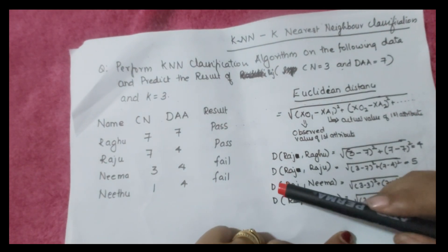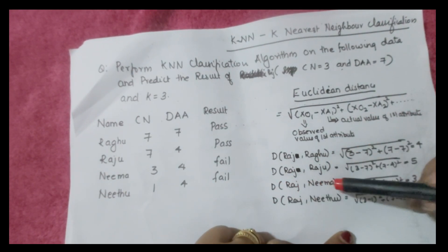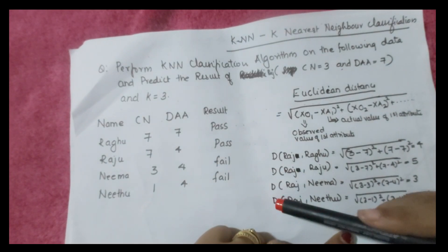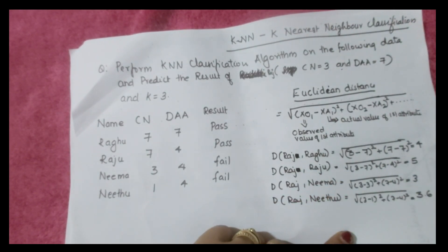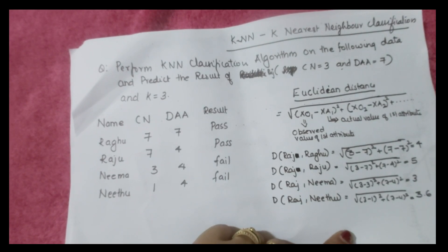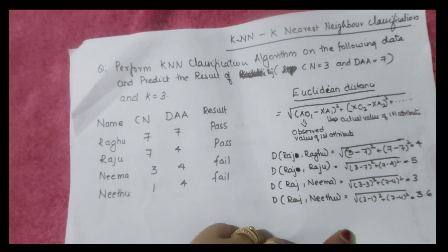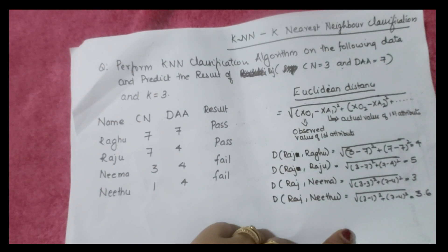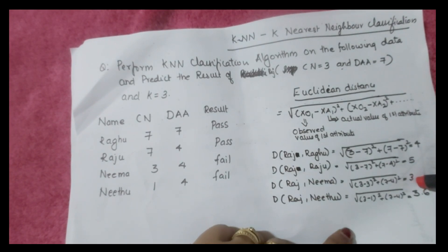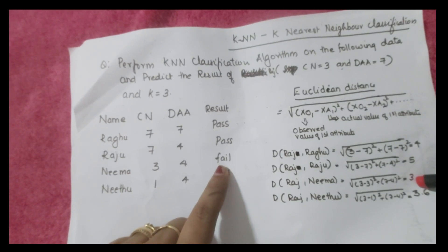Similarly, distance of Raj to Raju = 5. Distance of Raj to Neema = 3. Distance of Raj to Neetu = 3.6. If we consider only 1-NN, we take the smallest value, which is Neema with distance 3. Since Neema's result is Fail, Raj would be classified as Fail under 1-NN.